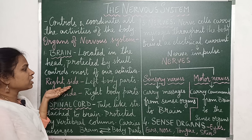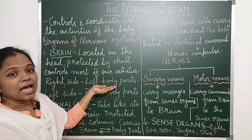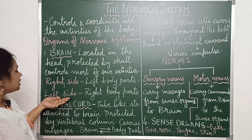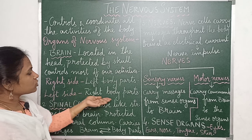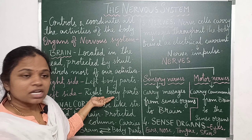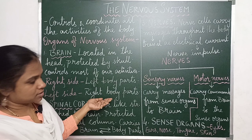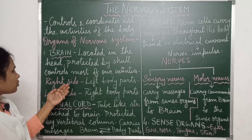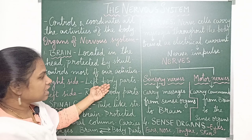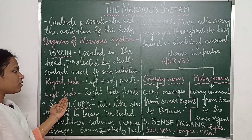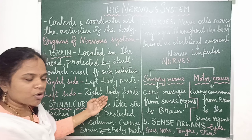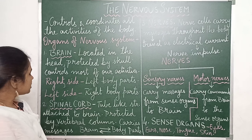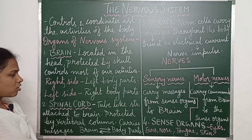As it is already told that it controls most of our activities, the right side of the brain controls the activities of the left body parts, and the left side of the brain controls the activities of the right body parts. So the right side controls the left body parts, and the left side of the brain controls the right body parts.